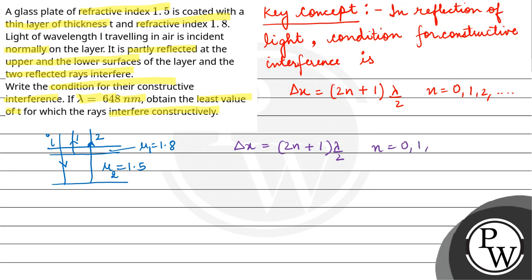We have the other condition for delta x, that is equal to 2μt cos r. Now we have i that is 90 degrees, so r is 0, that means cos r is 1. So delta x is equal to 2μt. Equating both of these, (2n+1) lambda by 2 is equal to 2μt.